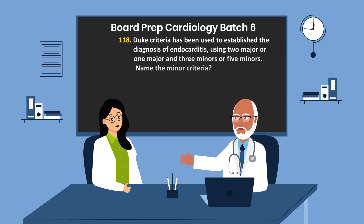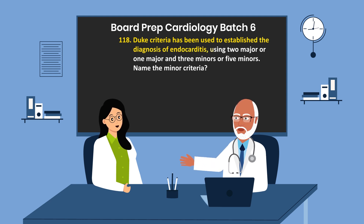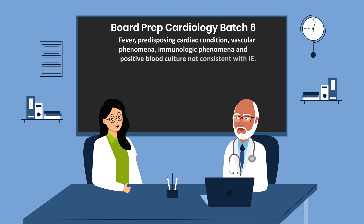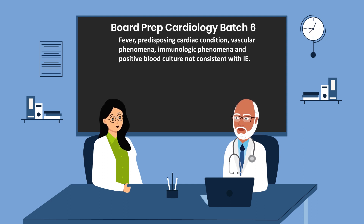Question 118. The Duke criteria has been used to establish the diagnosis of endocarditis using two major, or one major and three minor, or five minor criteria. Name the minor criteria. 1. Fever. 2. Predisposing cardiac condition. 3. Vascular phenomena. 4. Immunologic phenomena. 5. Positive blood culture not consistent with infective endocarditis.